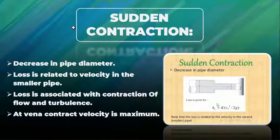The loss can be calculated with the formula: h_L equals k times v squared by 2g, where h_L equals loss in head, k equals resistance coefficient, v equals velocity of the liquid in the region of contraction, and g equals acceleration due to gravity.